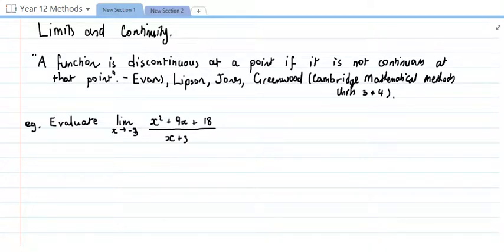I thought to start off I might share this gem with you from the Cambridge Math Methods Unit 3 and 4 book. A function is discontinuous at a point if it is not continuous at that point. Yeah, I thought that was quite a nice explanation of it. So anyway, moving on from there.